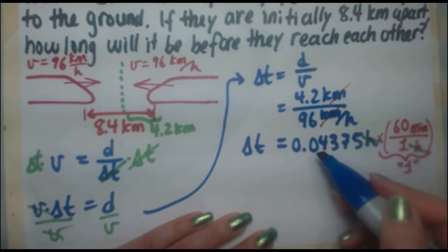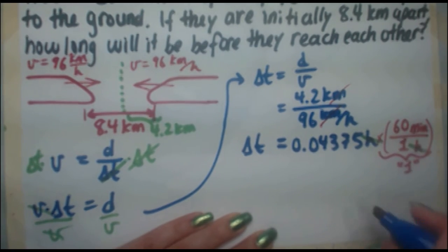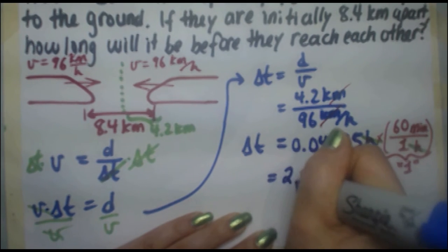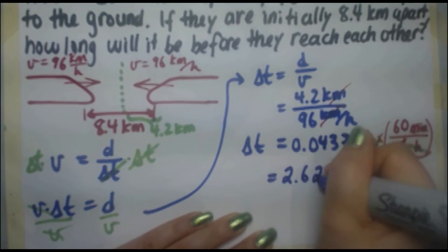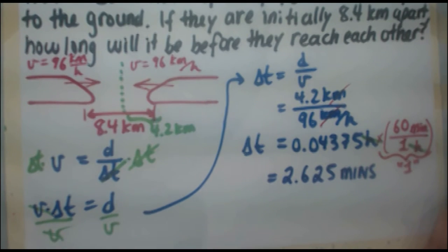So all you have to do is the calculation, 0.04375 times 60, and that leaves you with 2.625 minutes. Now, we're almost done.